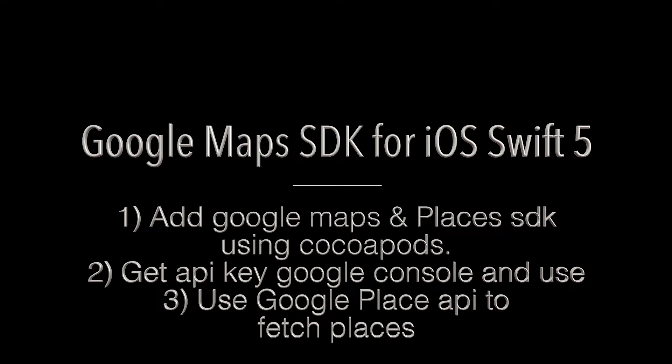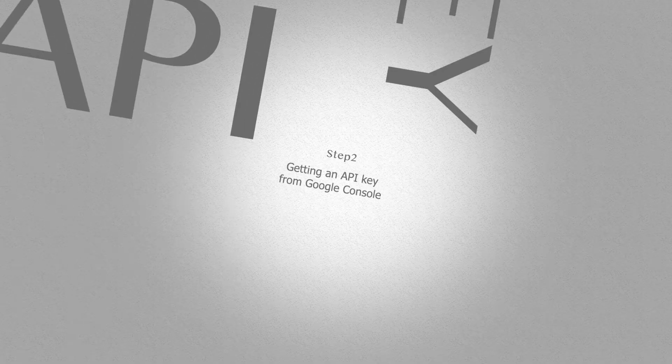Hello, what's up guys! I'm excited to share another interesting tutorial. In this video I will show you how to add Google Maps and Google Places in an iOS project using CocoaPods. I will go through from the start by generating an API key in Google Console and using that key to get Google Places using the autocomplete API. The SDK automatically handles access to Google Map servers, map displays, responses, and user gestures. In the second part I will add the Google API key from Google Console.